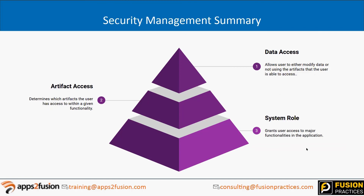In summary, there are three layers of security management. The first is system roles — there are four predefined roles and you must assign one to each user. The second layer is artifact access, with a typical example being access to a data form. The third and most granular level is data access, where in FCCS you can specify access at the Scenario, Entity, Account, and Data Source dimensions. If a user has write access on the Actual scenario but only read access on the Germany entity, the least permissive access controls what that user can do on that segment combination.